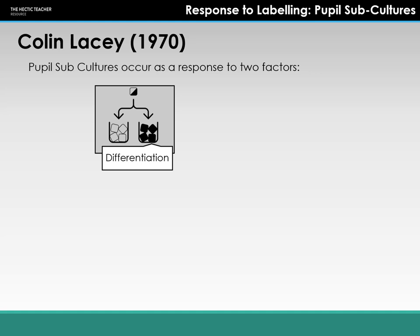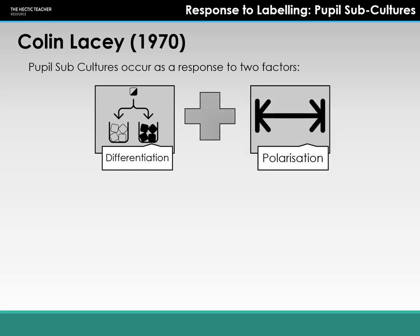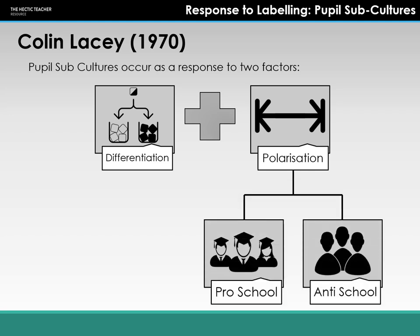Linking back to ideas of in-school groupings — setting, streaming, in-class groupings, mixed ability groupings — there are those considered to be gliders who just get on and carry through, not standing out for excellence or poor behaviour. Along with differentiation, Lacey identifies polarisation: the process in which students respond to streaming and groupings by moving towards one or more polar opposites or extremes — which is where we get pro and anti-school subcultures.